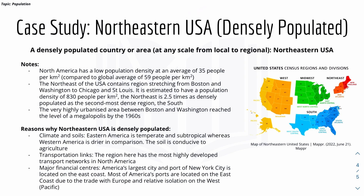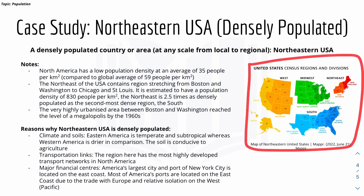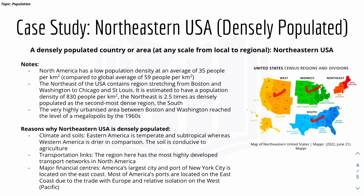Here's the first case study: a densely populated area at any scale from local to regional — the Northeastern United States. North America overall has a low population density of around 35 people per square kilometer, compared to the global average of 59. But the Northeastern USA has a density of 830 people per square kilometer. The region stretches from Boston and Washington to Chicago and St. Louis, as shown on the map here — the Northeast is highlighted on the right side of the country.